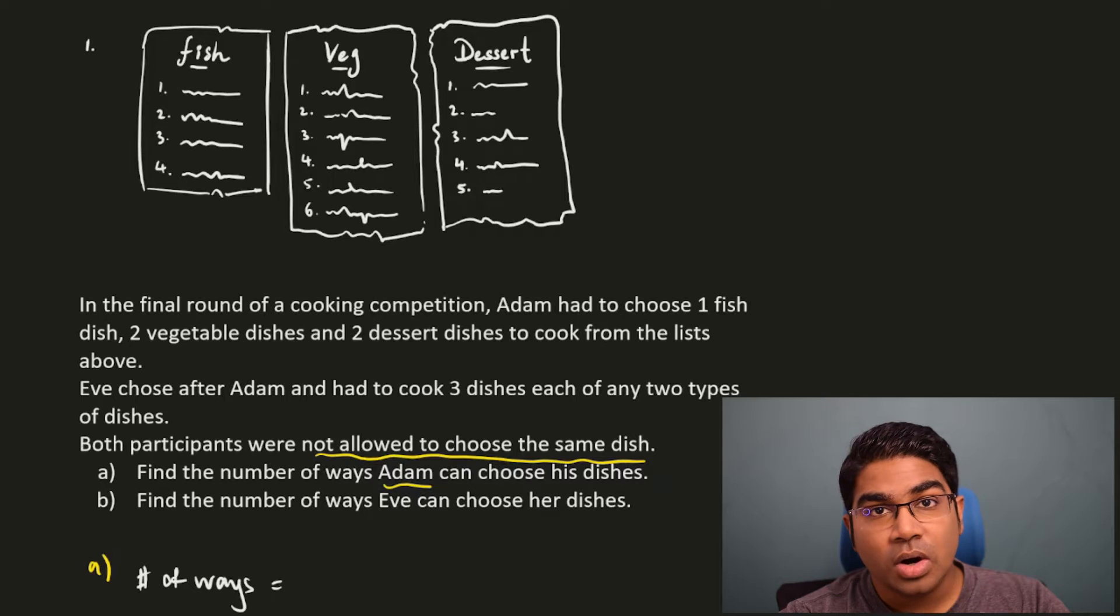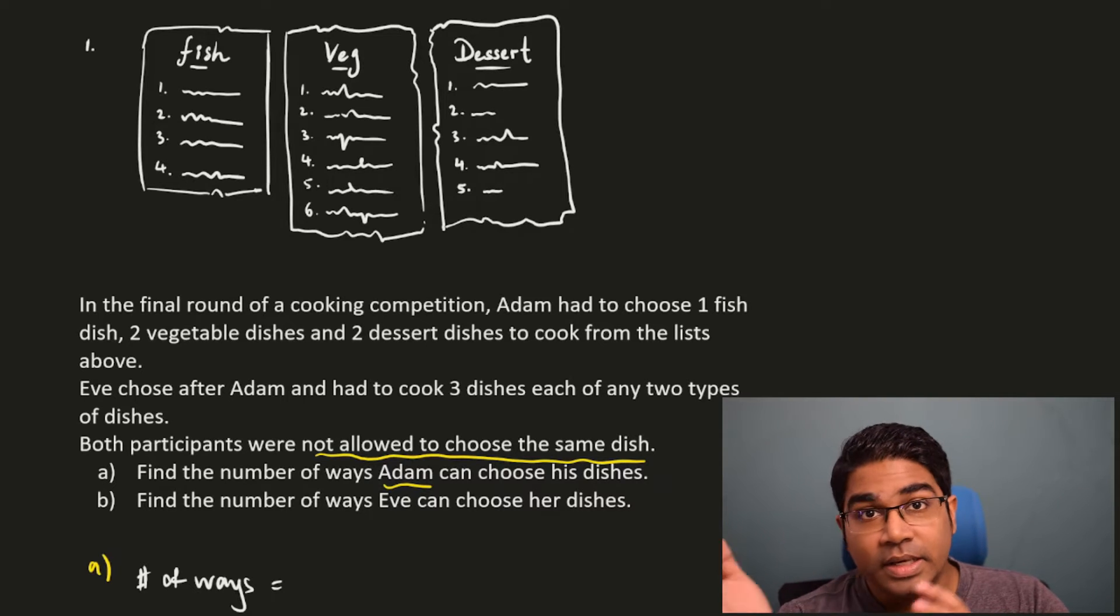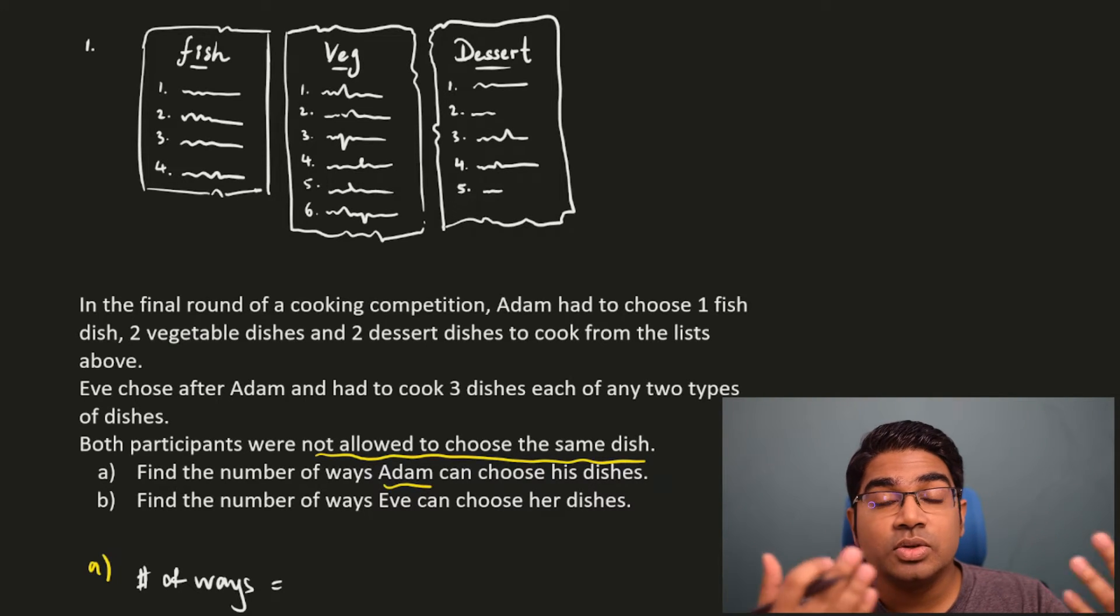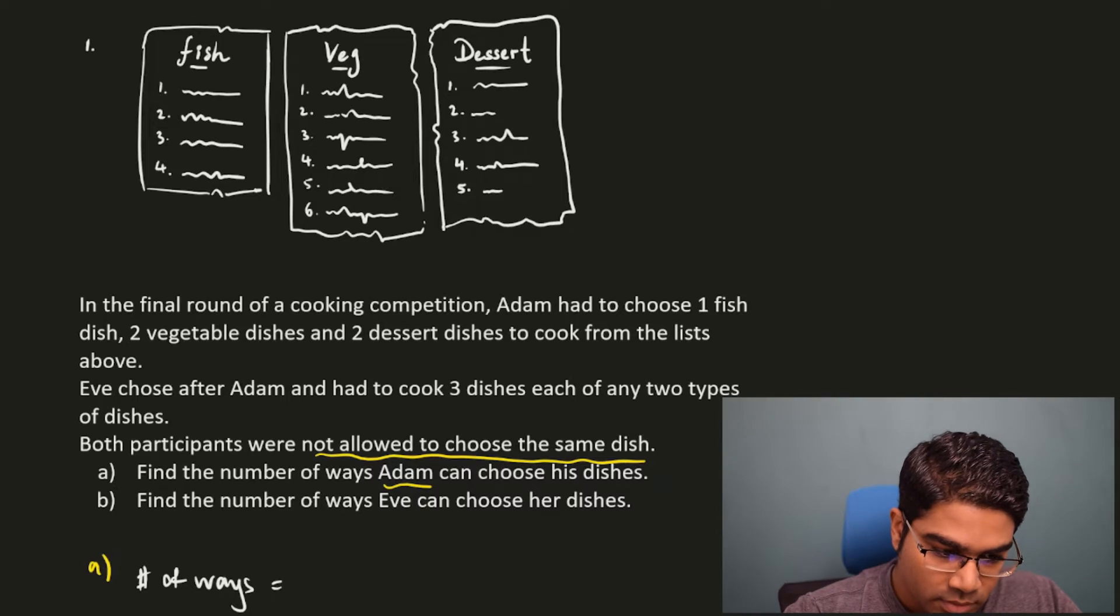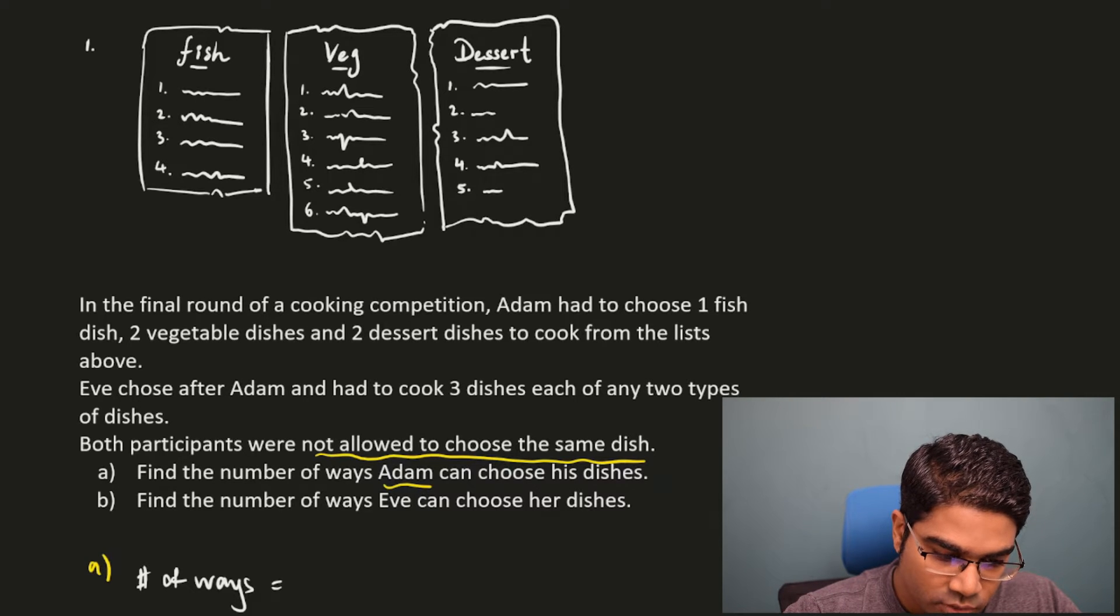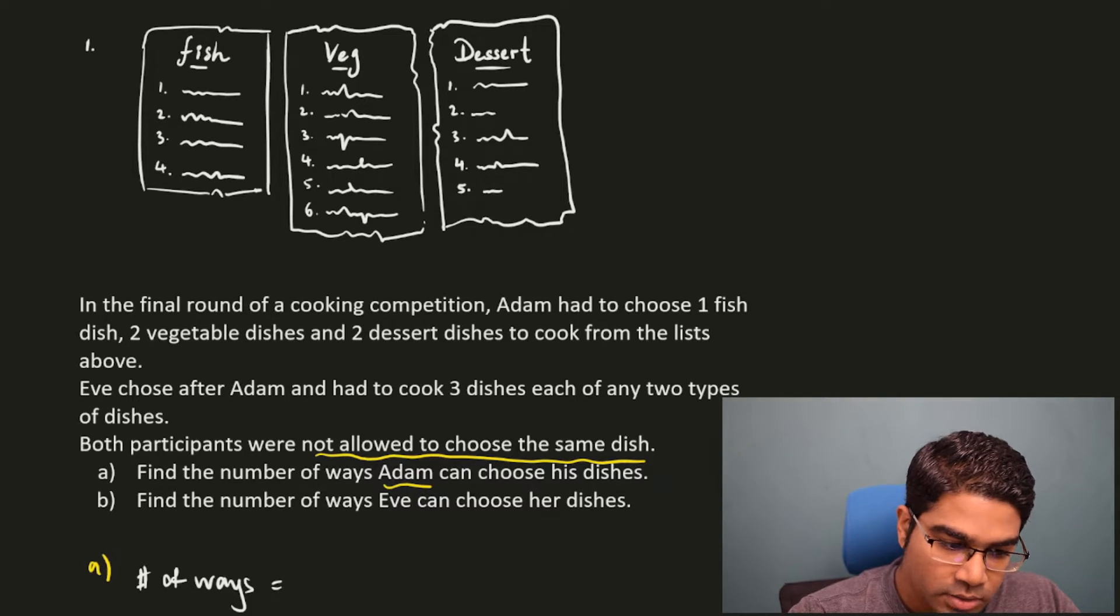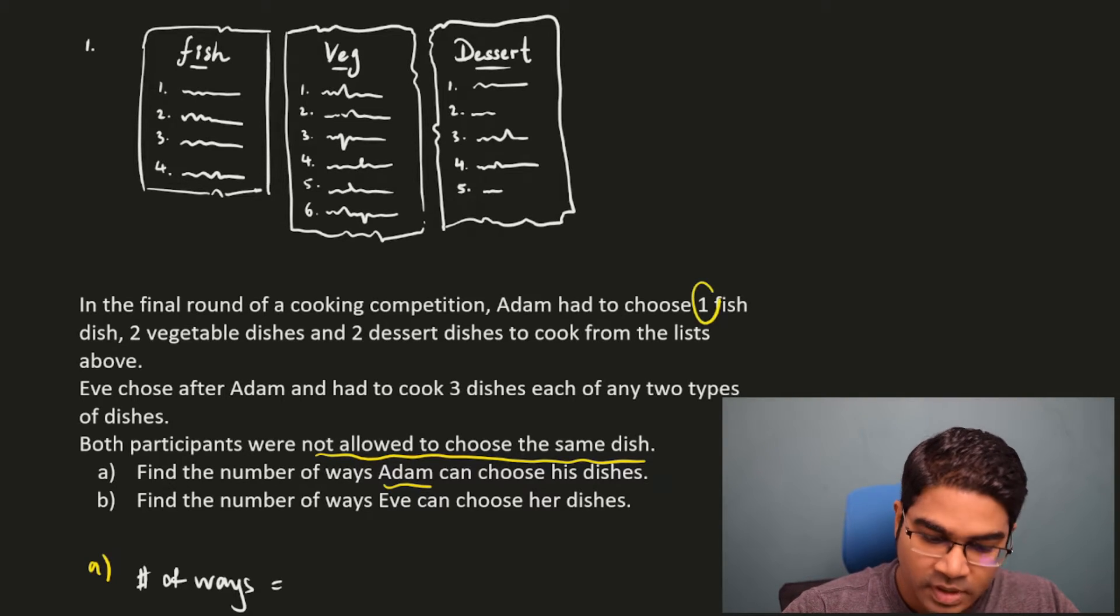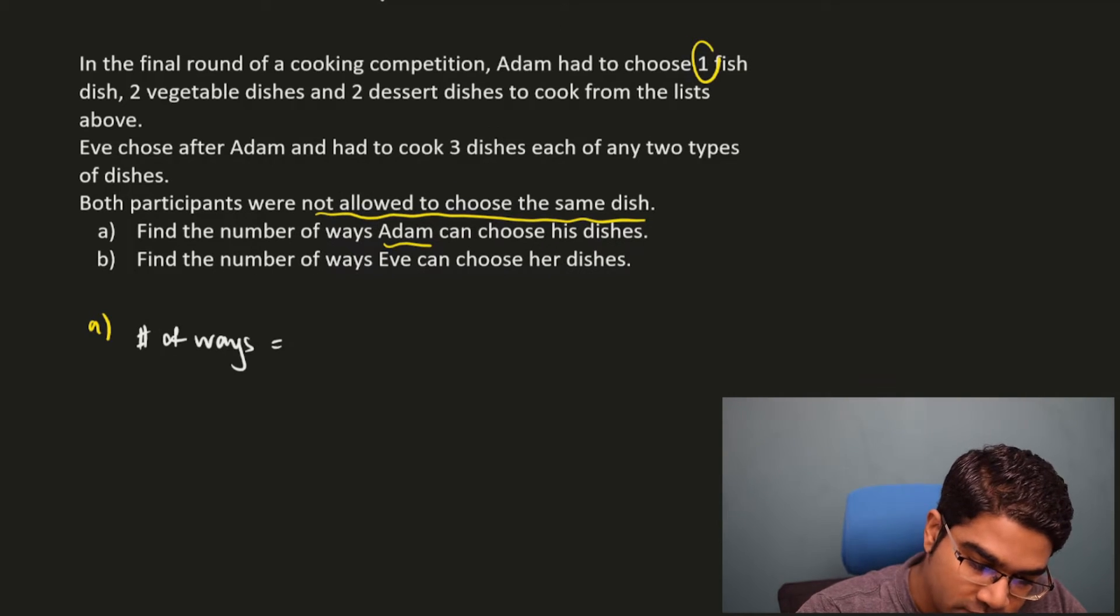For combination, the order of arrangement doesn't matter. It doesn't matter which fish dish he chooses first, as long as he chooses the fish dish. So there is no order here. Therefore, the number of ways that he can choose the fish dish, altogether there are four dishes. He needs to choose one. That would be 4C1. This is for the fish dish.